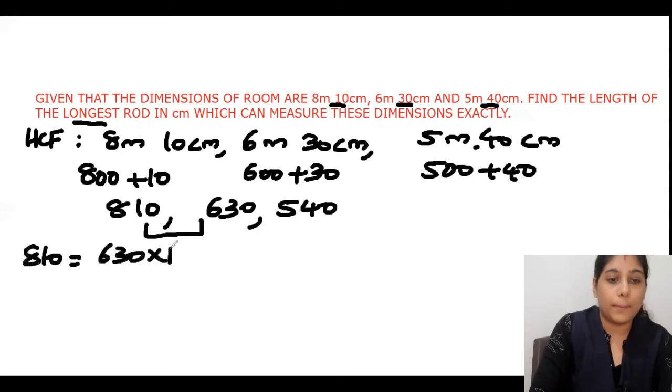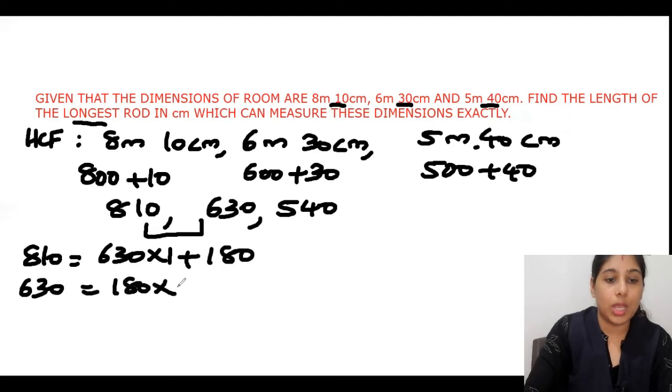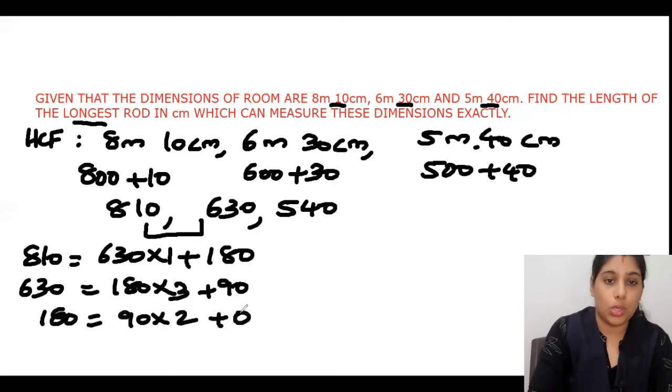630 equals 180 times 3 plus 90. Then 180 equals 90 times 2 plus 0. So we understood that the HCF of 810 and 630 is 90.